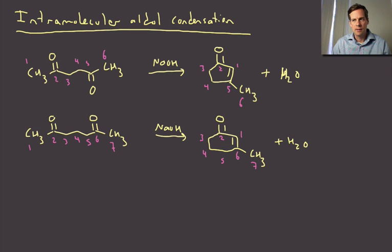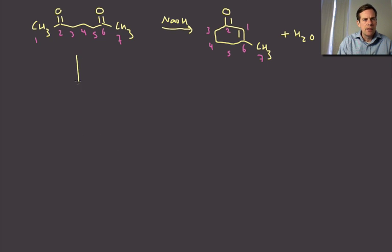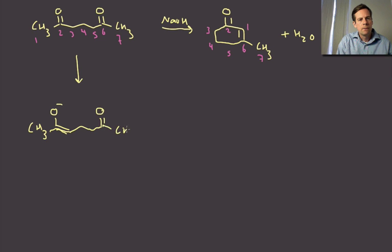So let's take the second case, and we can look at that. So imagine if we took this and enolized at position three or five, they're identical, so it doesn't matter. Let's see what that would look like. So we form our enolate, let's say at position three.